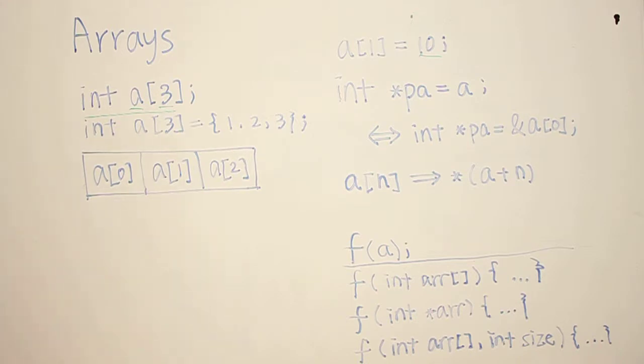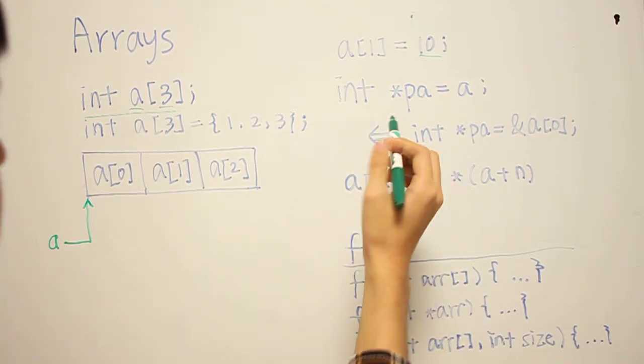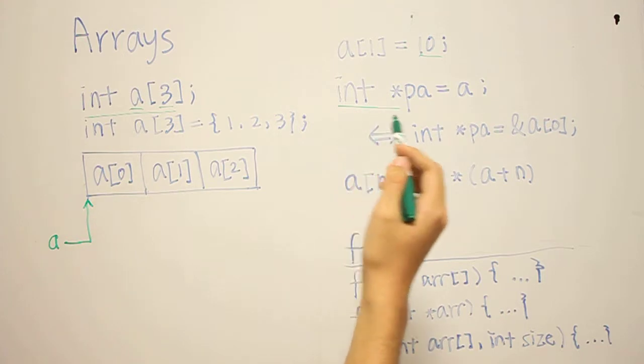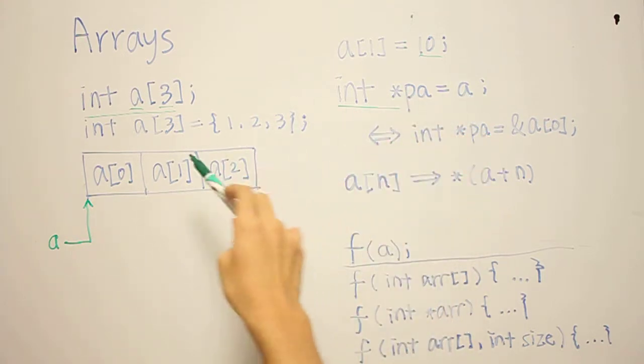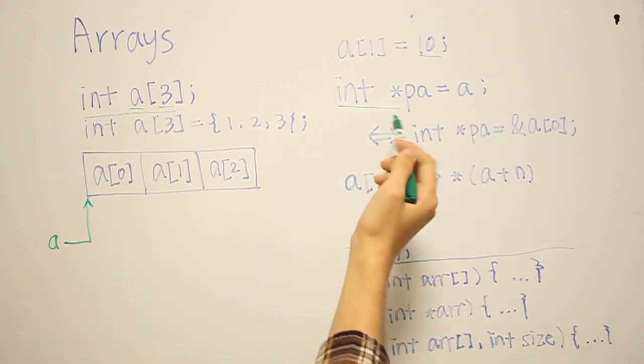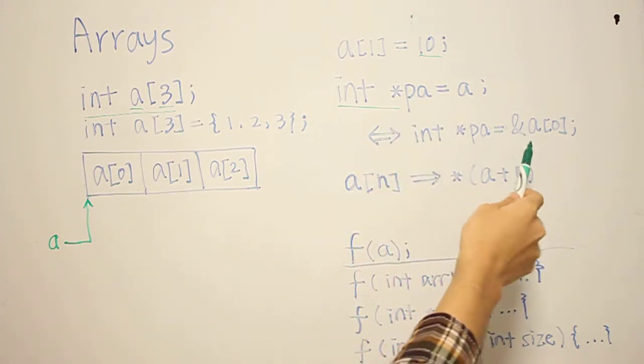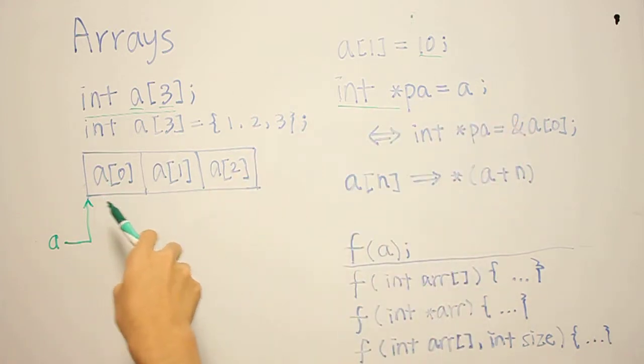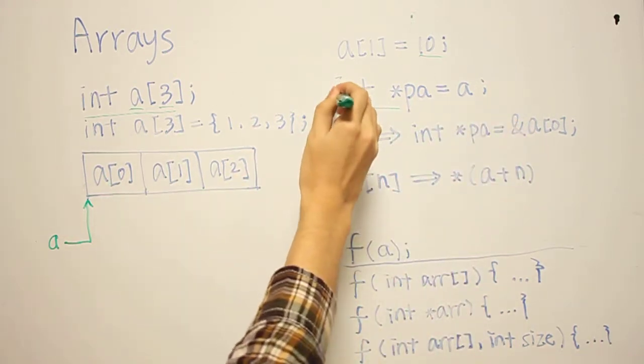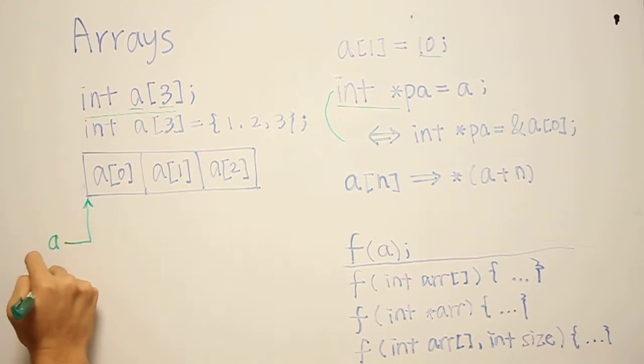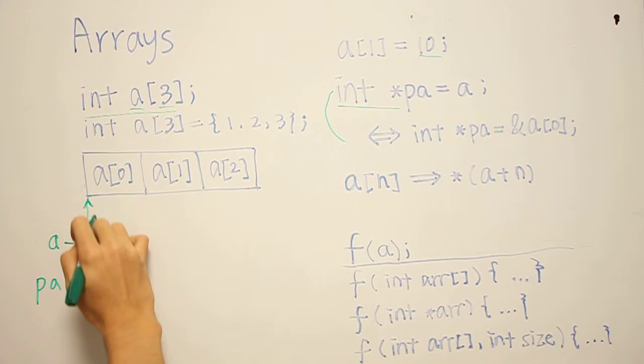Arrays are basically pointers to a chunk of memory. So when we have A here, you can think of it as a pointer that's pointing to the first element in this chunk of memory. What we can do is create a pointer of type integer and then assign the value in A into this pointer. And this is actually equivalent to doing this. So we're basically assigning the address of the first element into PA. And if we do this, then it creates a pointer that points to the first element in this array.